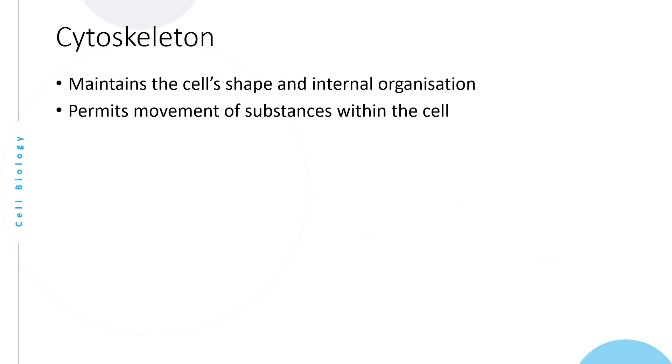Moving on to the other components in the cell. Next in line is cytoskeleton. As the name tells you, it is the skeleton of a cell. It maintains the cell's shape and internal organization and permits movement of substances within the cell.